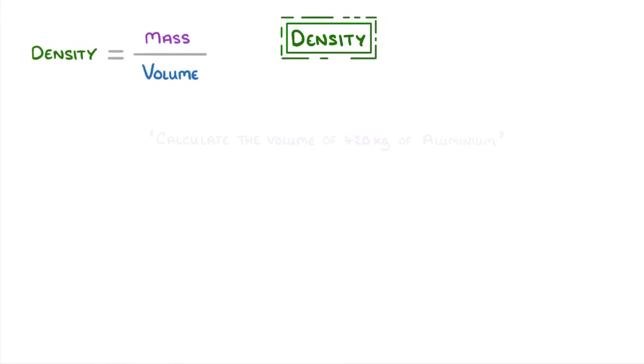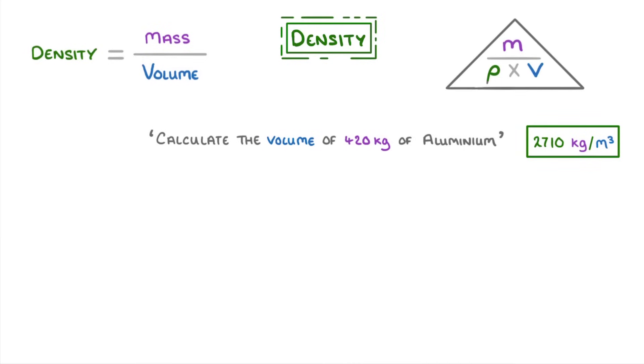As an example question, let's calculate the volume of 420 kilos of aluminium. In the exam, they'll tell you that the density is 2710 kilos per meter cubed. You'll just have to rearrange the equation to work out the answer. If we use the triangle, we can see that to calculate volume, we have to divide the mass by the density. So we just do 420 kilos divided by 2710, which gives us a volume of 0.155 meters cubed.